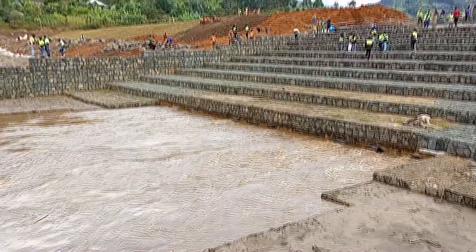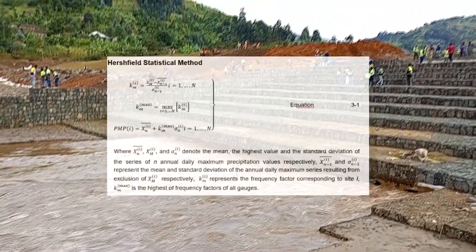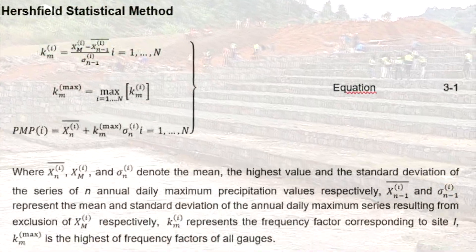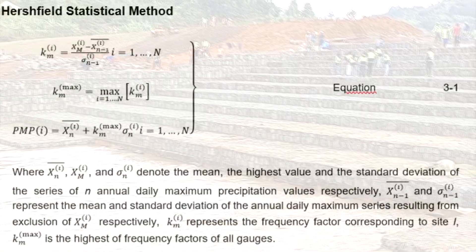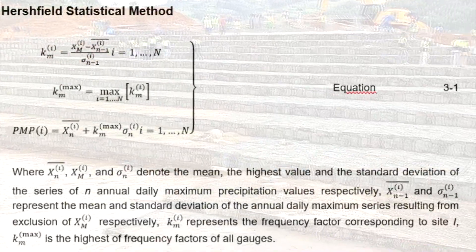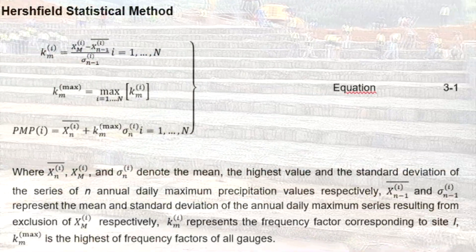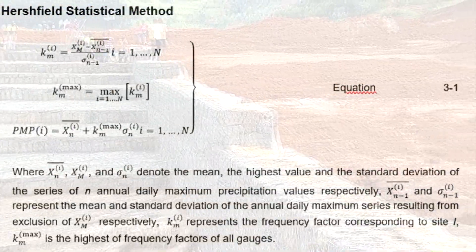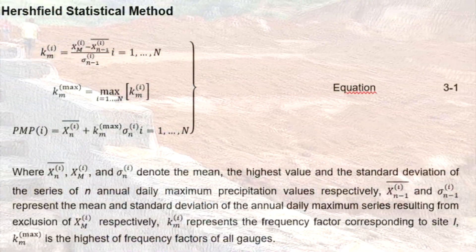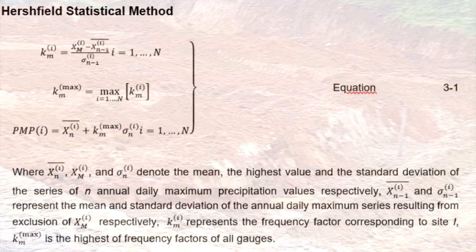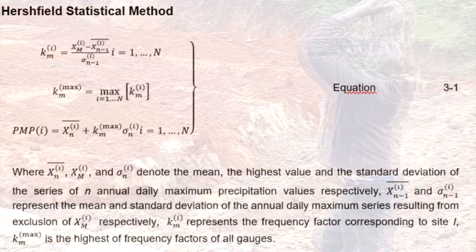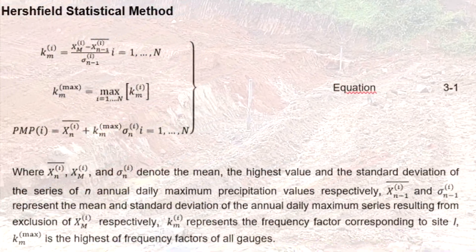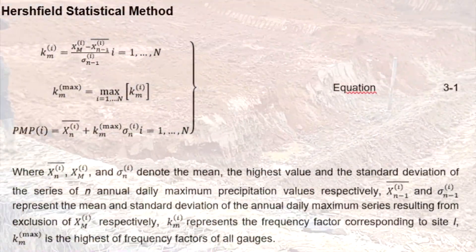The Hirschfield method is a commonly used statistical method for estimating PMP. This method entails computation of the frequency factor, adjustment of the frequency factor, construction of an envelope curve of the frequency factor, estimation of PMP, choosing a probability distribution of PMP, and determination of the return period of PMP.